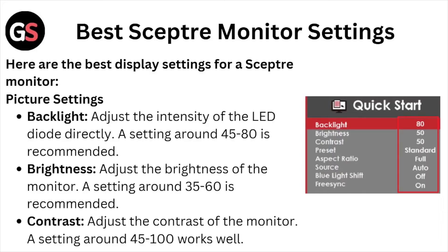Backlight: adjust the intensity of the LED diode directly — a setting around 45 to 80 is recommended. Brightness: adjust the brightness of the monitor — a setting around 35 to 60 is best recommended.